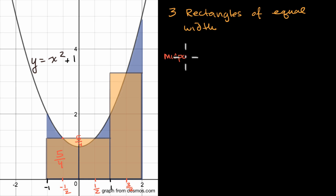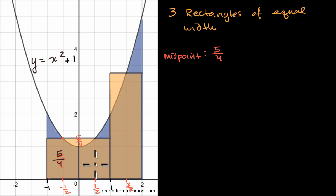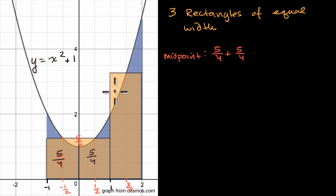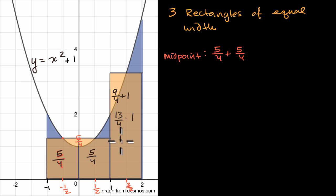Using the midpoint to define the height, the first rectangle has an area of five-fourths. The second rectangle has a midpoint at one-half: one-half squared plus one is five-fourths, times the width of one — so five-fourths. Then the third rectangle has its midpoint at three-halves: three-halves squared is nine-fourths plus one, which equals thirteen-fourths. So it has a height of thirteen-fourths and a width of one, giving an area of thirteen-fourths.